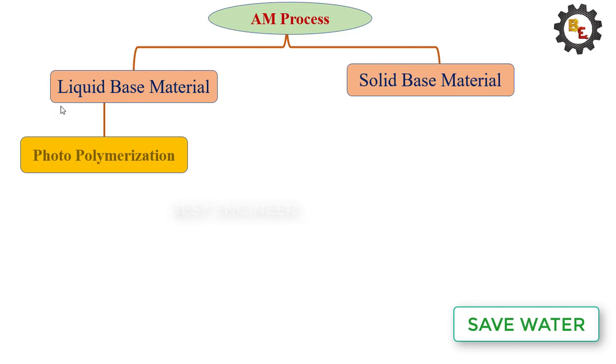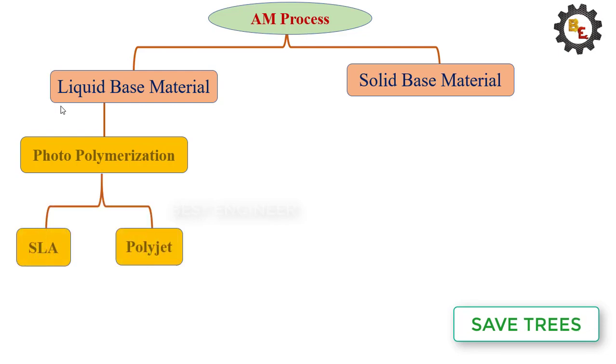Under photopolymerization there are two technologies: the first one is Stereolithography Apparatus (SLA), and the second one is Polyjet printing.